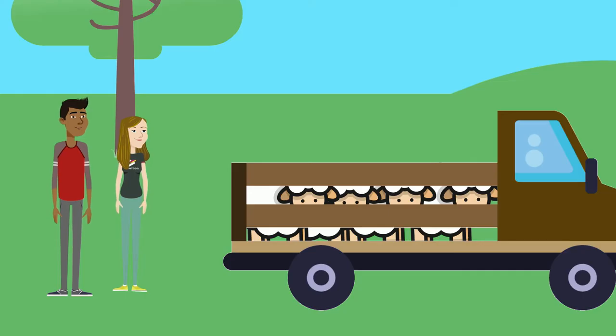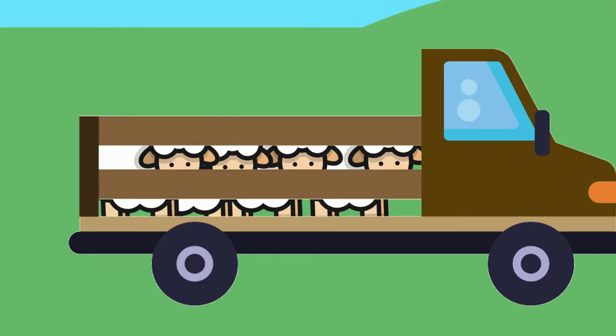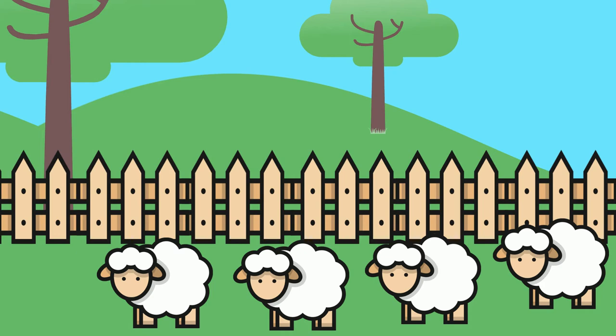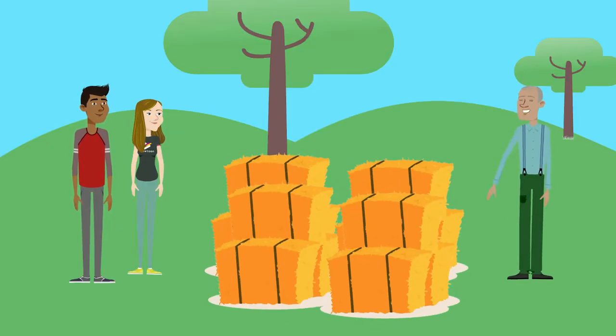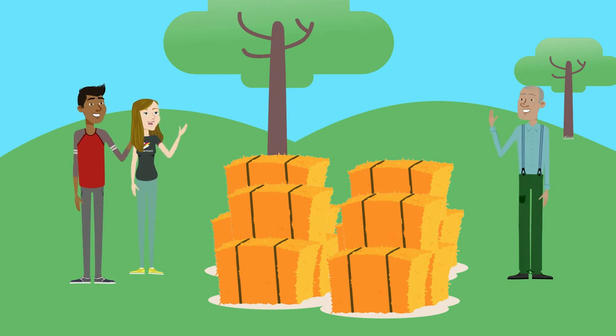Have practices in place to prevent weeds from entering your property. These include having a holding paddock or yard area dedicated to receiving new livestock so that weed seeds can be eliminated from animals, having a dedicated, well-equipped area for washing down and cleaning vehicles and farm machinery, and knowing where your fodder is coming from and ensuring that it's weed-free.